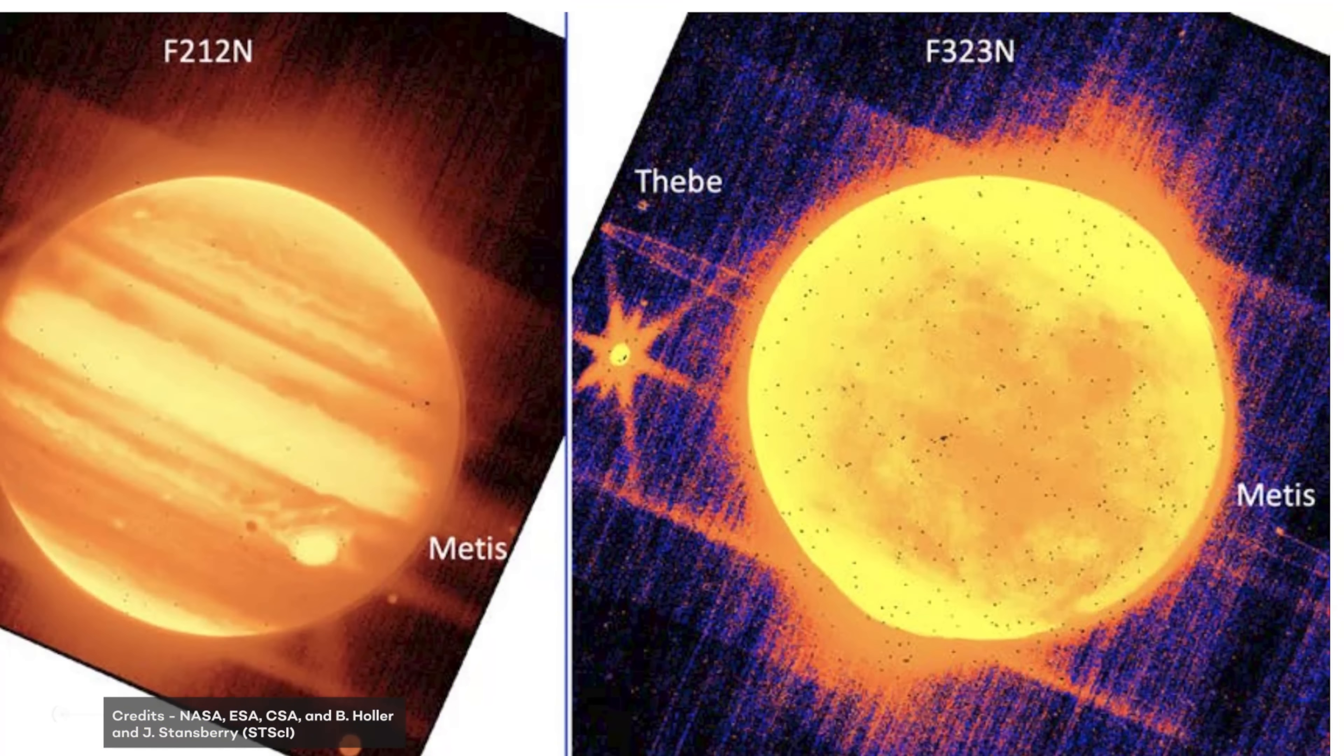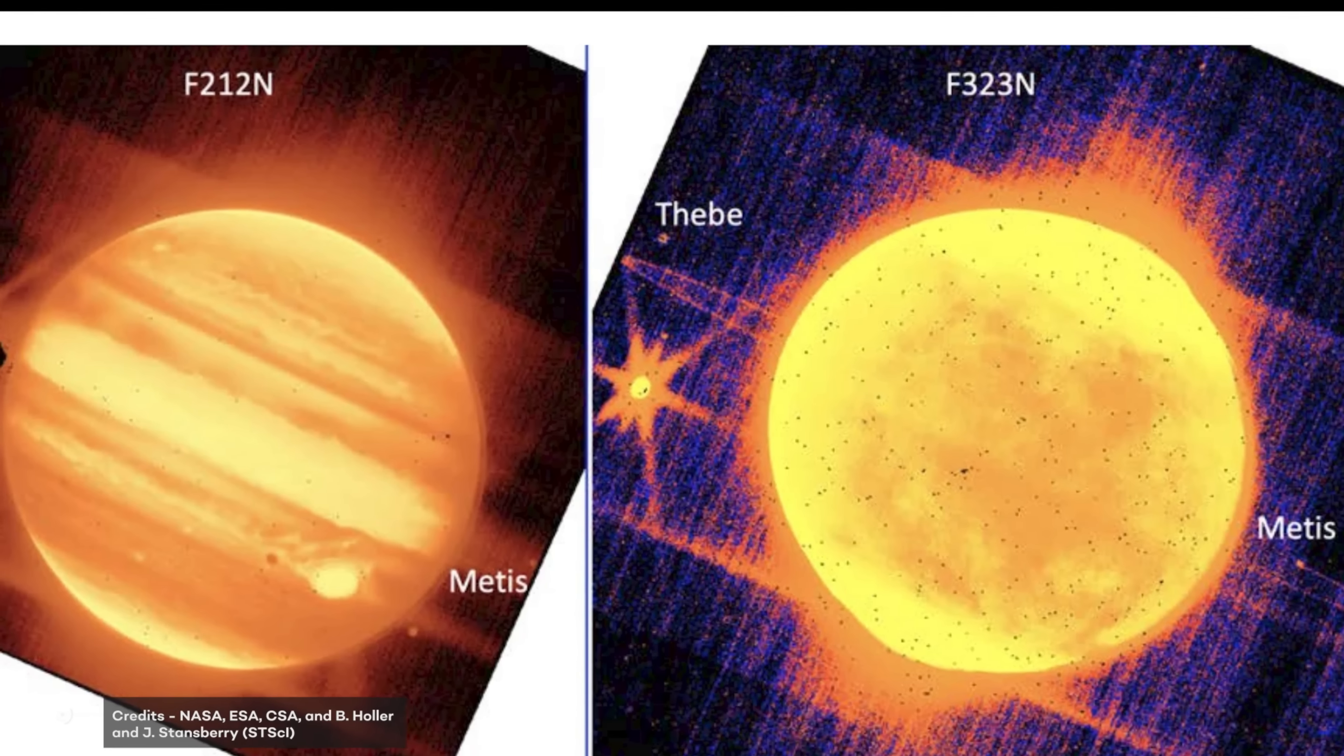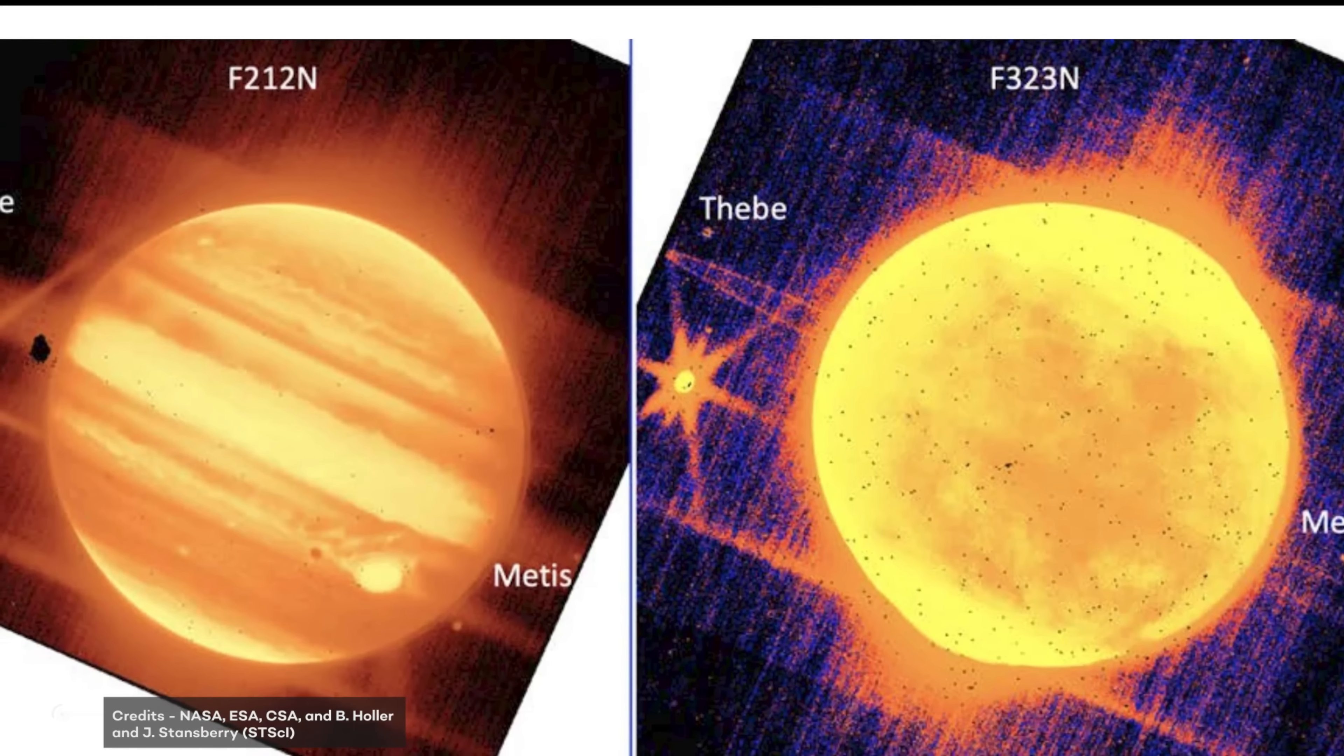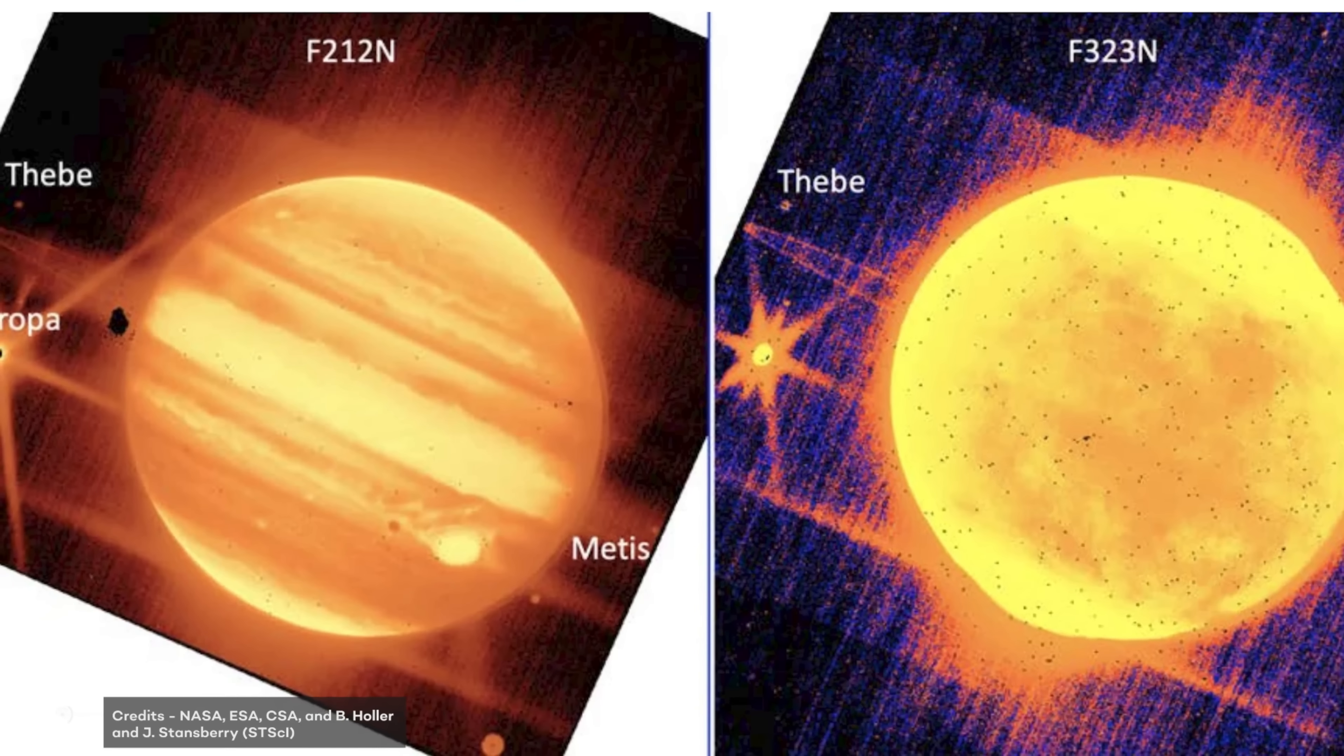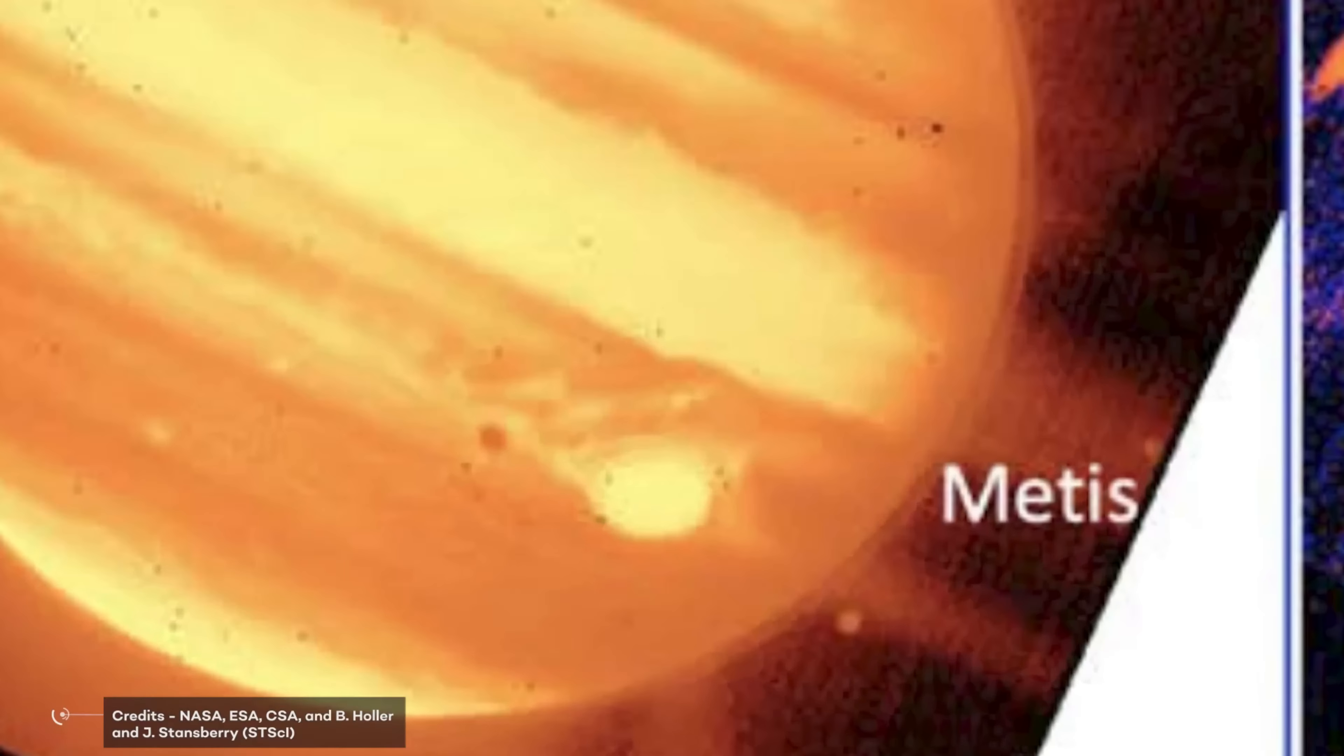Jupiter and its rings, as well as three of its moons, Europa, Thebe and Metis, are seen in the image released by NASA. The shadow of Europa may also be seen in the picture on the left, right near to the planet's notorious Great Red Spot.